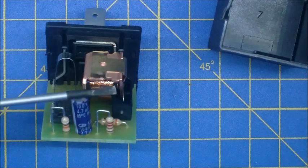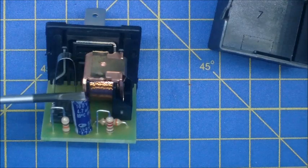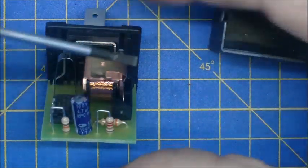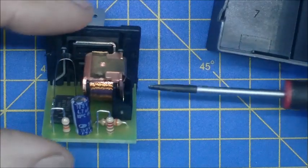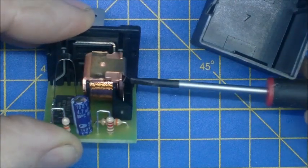This assembly here looks sort of like a relay because you can see there's a coil there, and if you look in from the side here you can see there's a set of contacts.